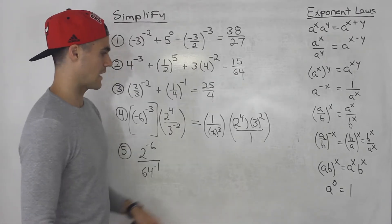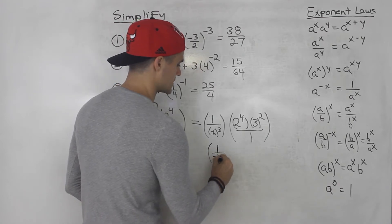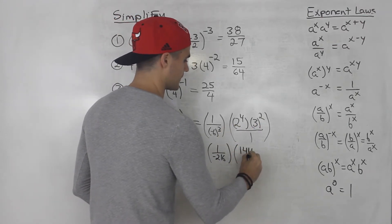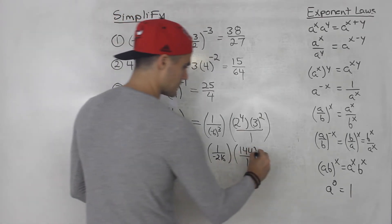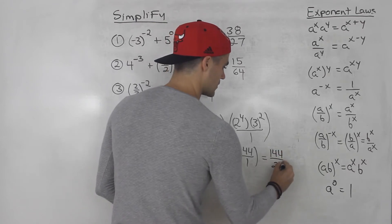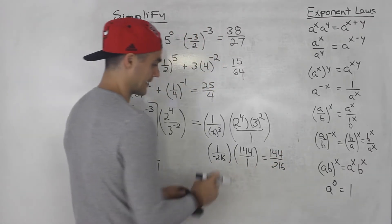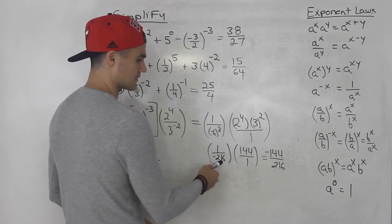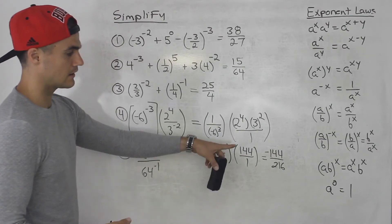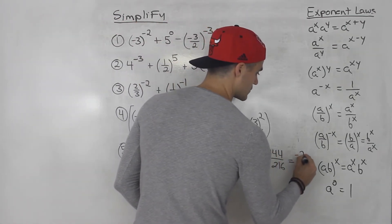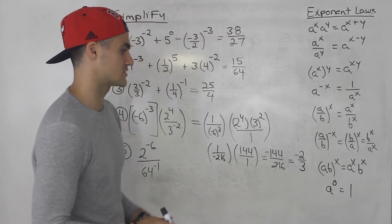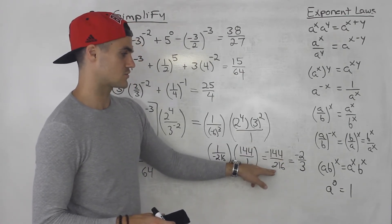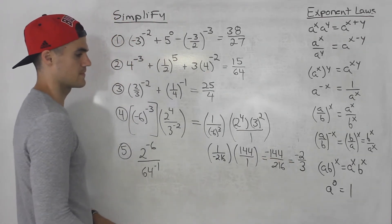Negative six to the power of three ends up being one over negative 216. Two to the power of four is 16, three to the power of two is nine, and nine times 16 gives us 144 over one. So multiplying these fractions gives us 144 over negative 216. Bringing the negative up top gives us negative 144 over 216, which simplifies to negative two over three — 72 goes into both. So negative two over three is your answer. Plugging this into your calculator should give you negative two thirds or negative 0.666 repeating.